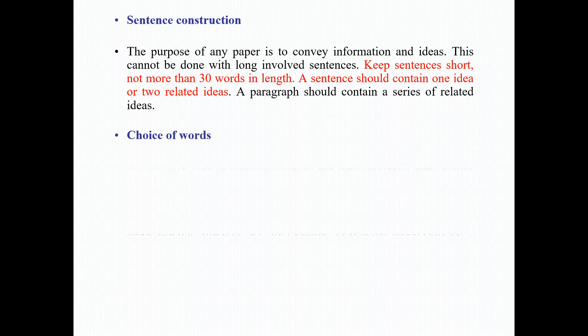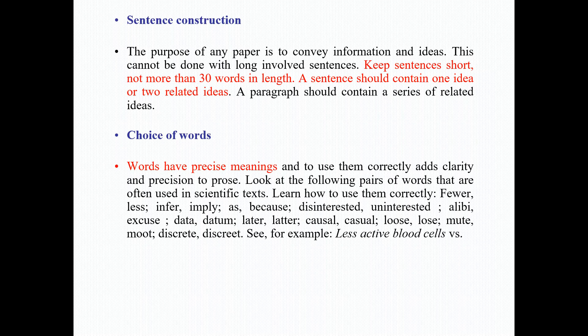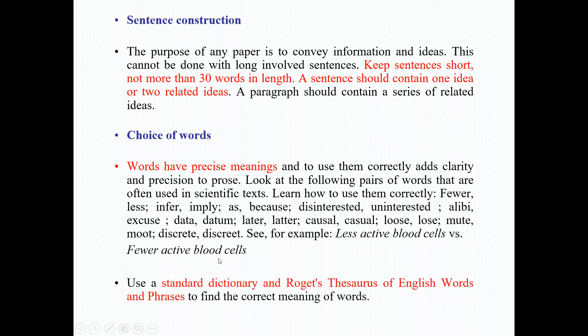For choice of words, words have precise meanings and to use them correctly aids clarity and precision to prose. Look at the following pairs of words that are often used in scientific texts and learn how to use them correctly: fewer/less, imply/infer, because/disinterested, uninterested/alibi, excuse/data/datum, later/latter, casual/causal, lose/loose, moot/mute, discrete/discreet. For example, 'less active blood cells' versus 'fewer active blood cells.' Use a standard dictionary and Roget's Thesaurus of English words and phrases to find the correct meaning of the words.